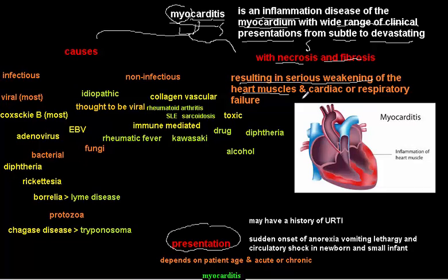The inflammation results in serious weakening of the heart muscle, leading to cardiomegaly and heart failure — sometimes cardiac and respiratory failure. The myocardial muscles become thickened due to inflammation. In late stages there is dilation of the heart, cardiomegaly, and ultimately heart failure as the end stage.